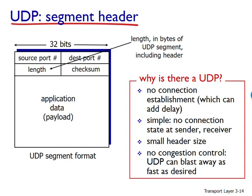The length field specifies the number of bytes in the UDP segment — that is, header plus data. An explicit length value is needed since the size of the data field may differ from one UDP segment to the next. The length field specifies the length of the UDP segment, including the header, in bytes.